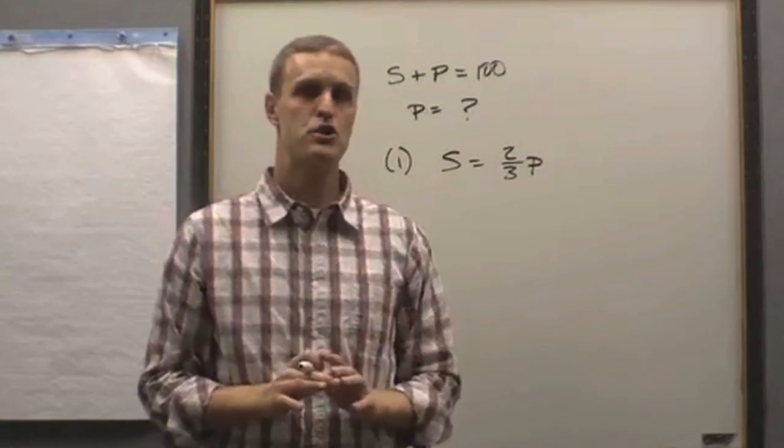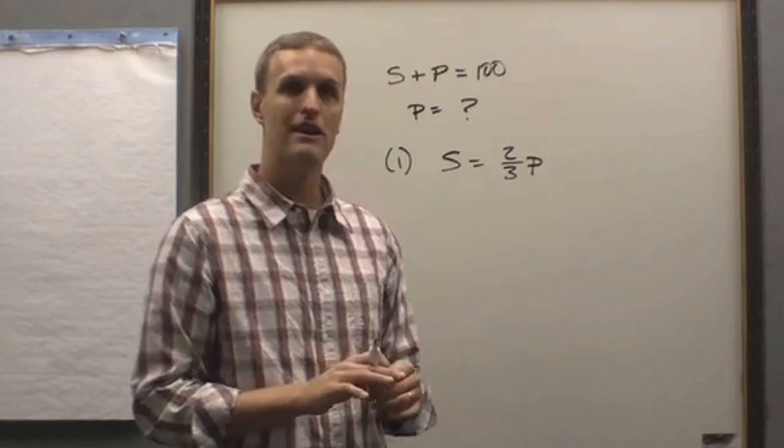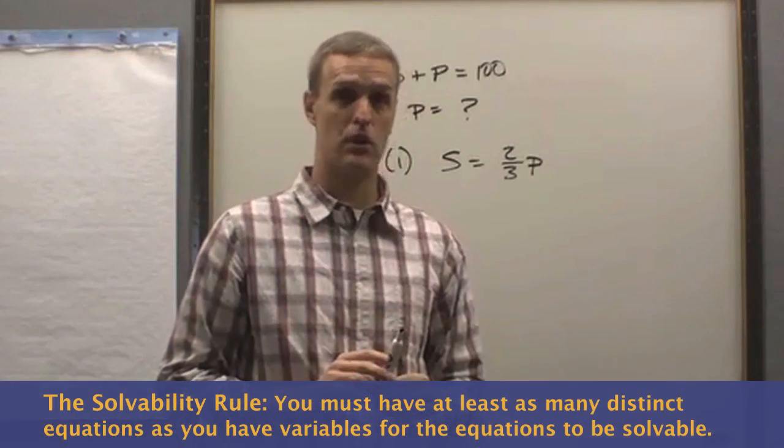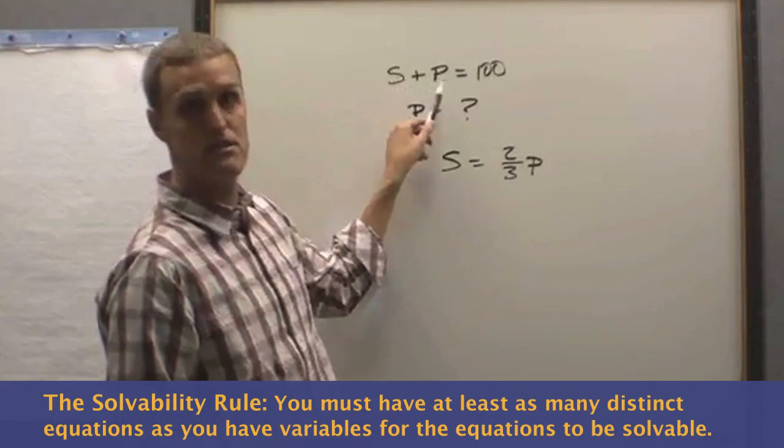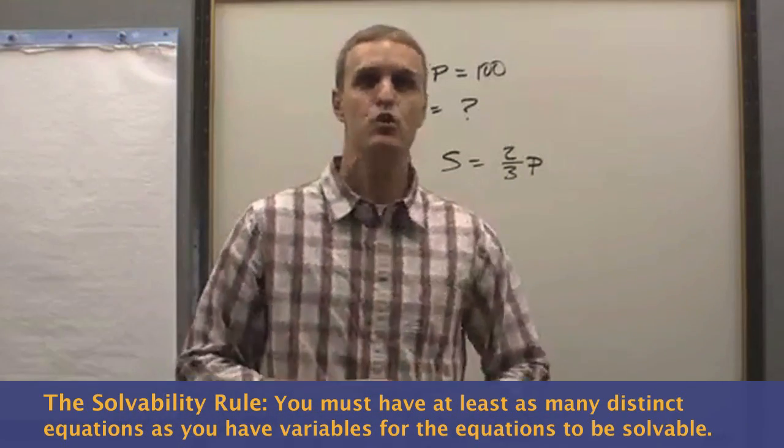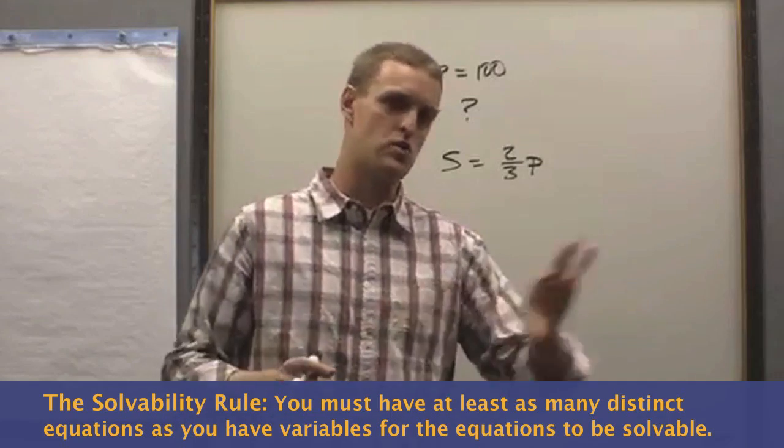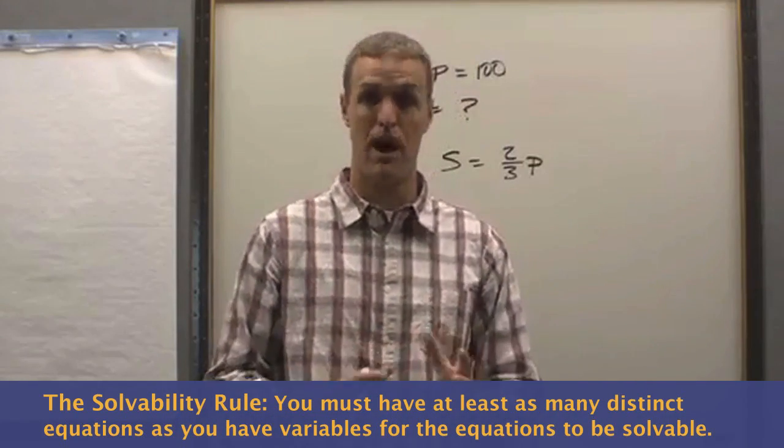Now, I don't care what you do with that. You don't have to do anything with that. All you need to do is recognize the solvability rule I just taught you. That S equals two-thirds P, and here S plus P equals 100. If you knew how to do simultaneous equations, which, by the way, you need to know how to do for the problem-solving section.